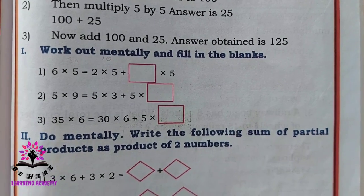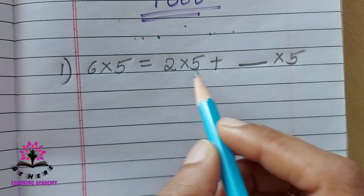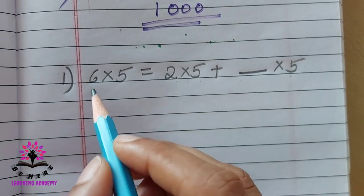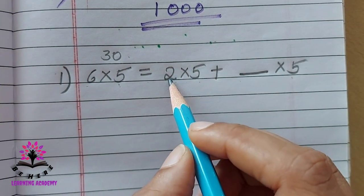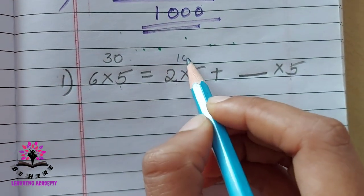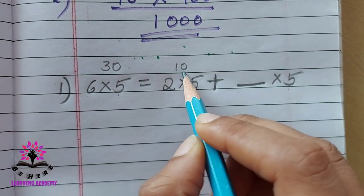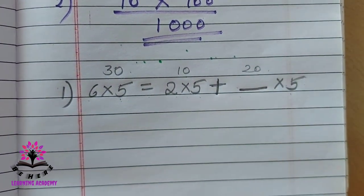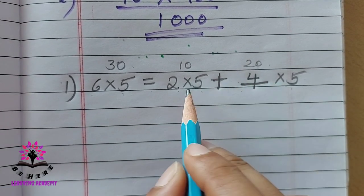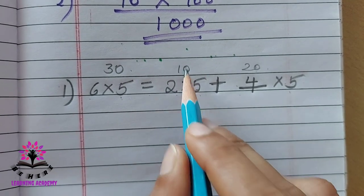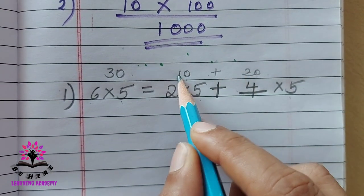Work out mentally and fill in the blanks. 6 into 5 is equal to 2 into 5 plus dash into 5. First, 6 times 5 is 30. Then 2 times 5 is 10. You need 20 more to get 30. 5 times 4 is 20. So 2 times 5 is 10, and 4 times 5 is 20. 10 plus 20 is 30.